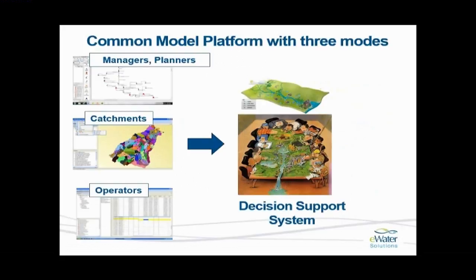Source has three major modes of operation. At the top we have the planning type mode, which is what this webinar is based on — for planning purposes or water system management. The second one is catchment models, showing the output of various rainfall-runoff models on a catchment. You can use catchment models in a planning mode if you don't have recorded inflow but wish to test planning options by generating inflows from sub-catchments. You can also use catchment models for looking at impacts of climate change, land use change, and catchment management options.